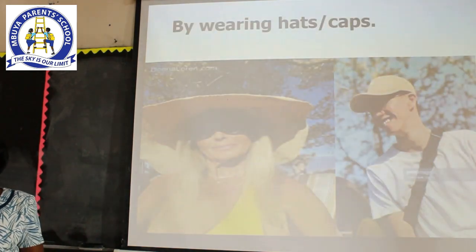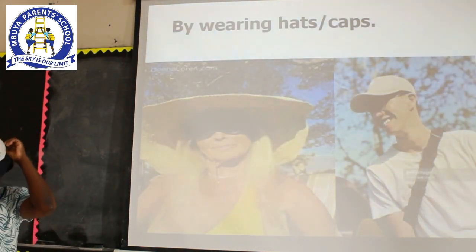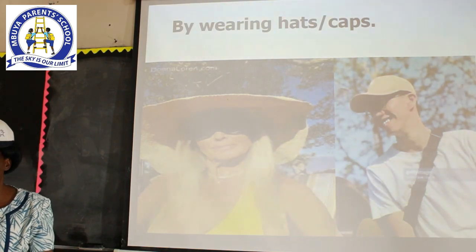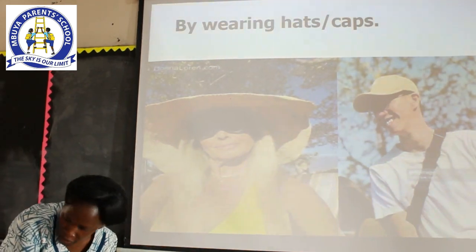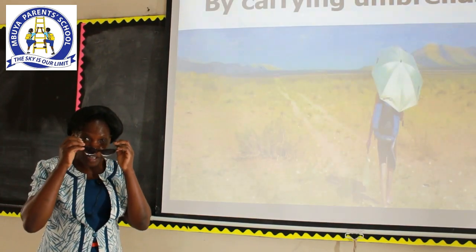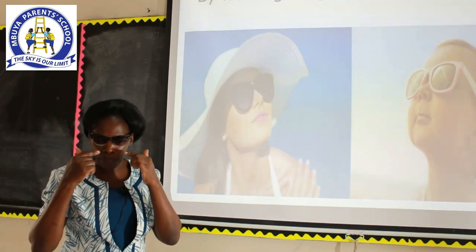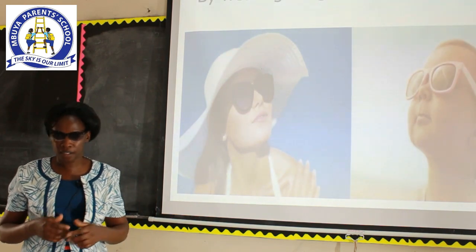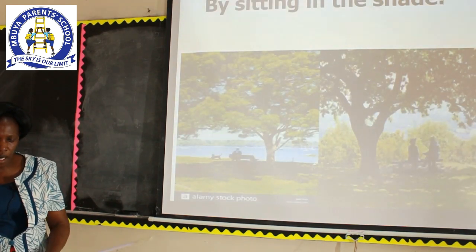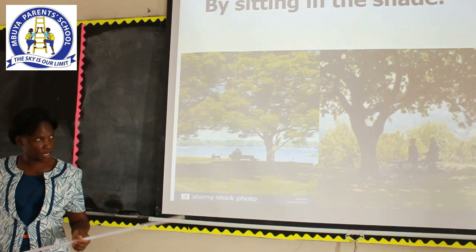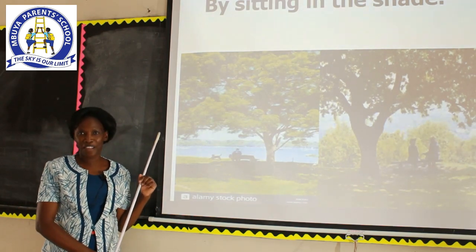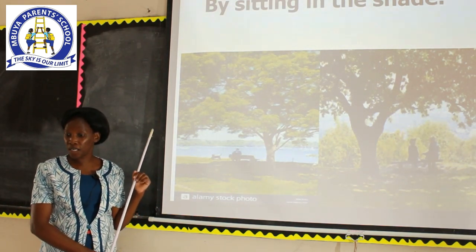Next, you can wear hats or caps when you are moving out — put on your cap, put on your hat, and move when the sunshine is too much. Three, you can wear sunglasses. I always move with mine. Whenever the sunshine is too much, I put them on to protect my eyes. Another way we can protect ourselves is by sitting in the shade. There are people and animals sitting under the shade — it's a way of managing the sunny weather.